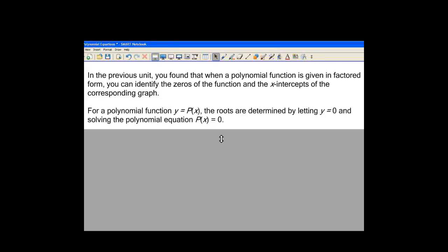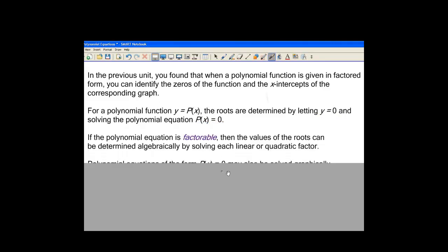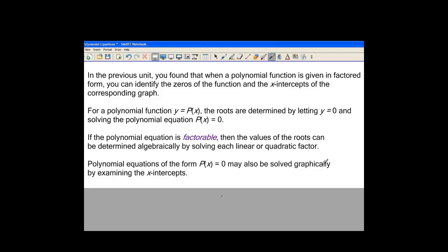In a polynomial, we can find the roots by letting the function equal zero, and then solving P(x) equals zero. If we have a polynomial that is factorable, then the values of the roots can be determined algebraically by solving each of the factors. As well, if we have a polynomial that's equal to zero, we can also solve it graphically by looking at the x-intercepts of the function. We did a little bit of that last unit. Now we're going to do a little bit more, and we're going to go a little bit further.